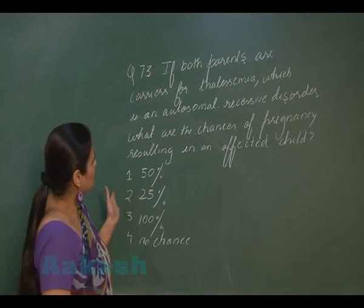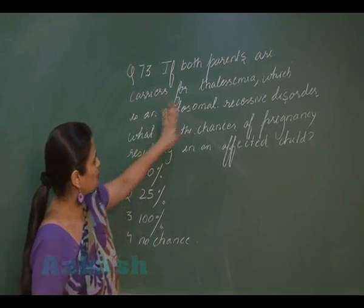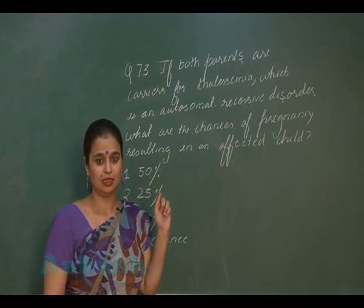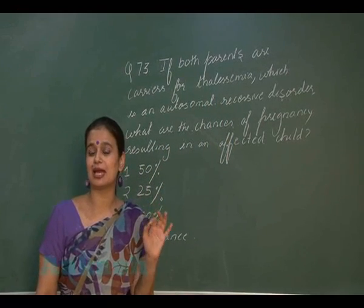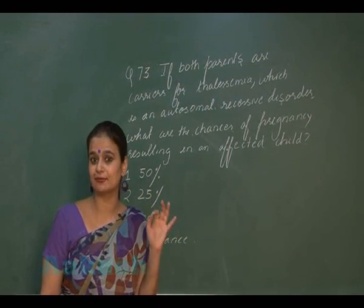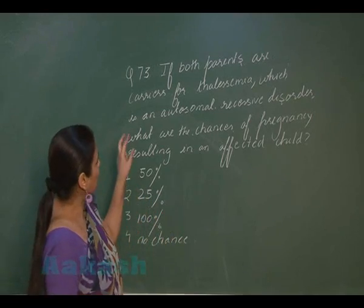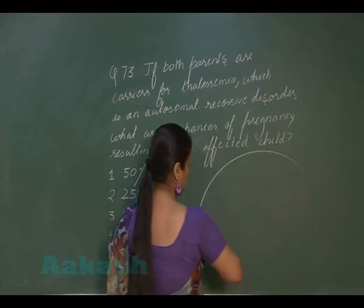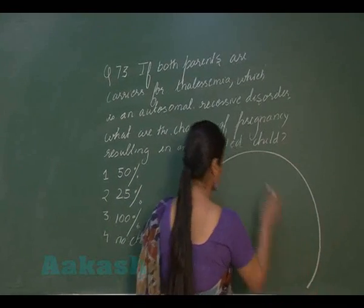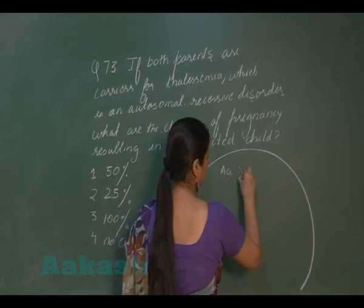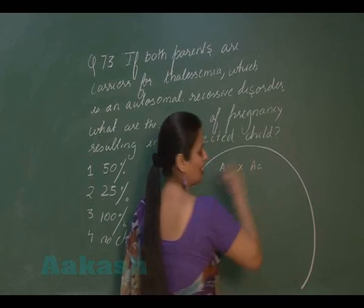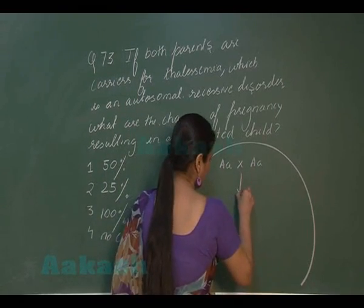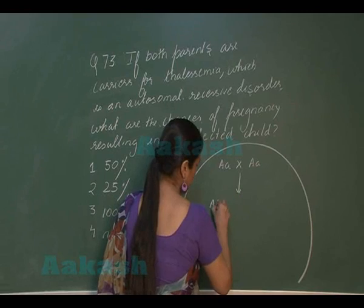In question number 73, the disease being discussed is thalassemia, which is an autosomal recessive disorder. Here, both parents are carriers, so the genotype for both parents is the heterozygous condition.